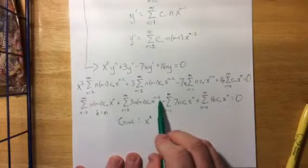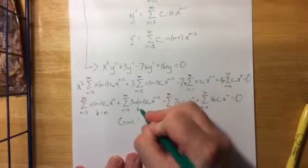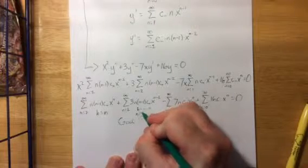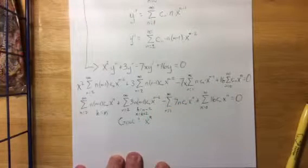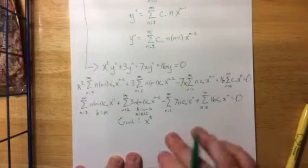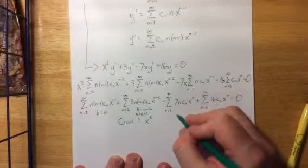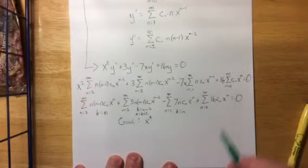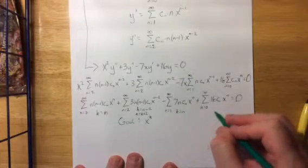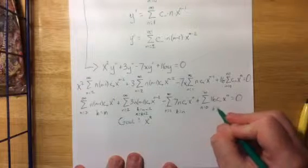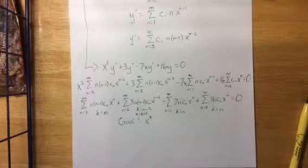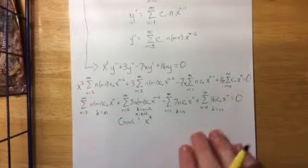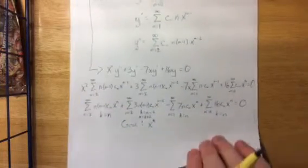On the second term we have x to the n minus 2, so we let k equal n minus 2, which means n equals k plus 2. On the third term we already have x to the n, so we substitute k equals n directly. On the last term, same thing — we let k equal n.